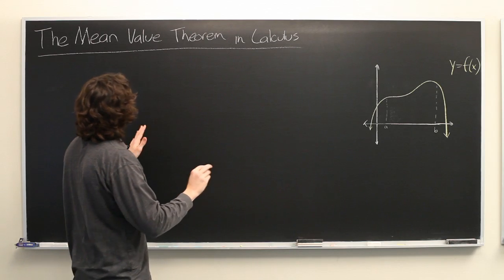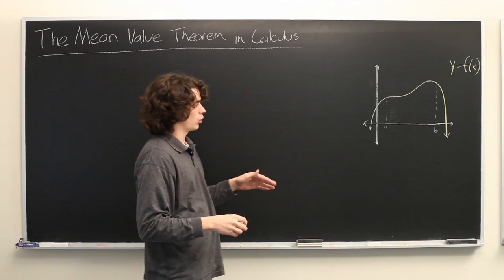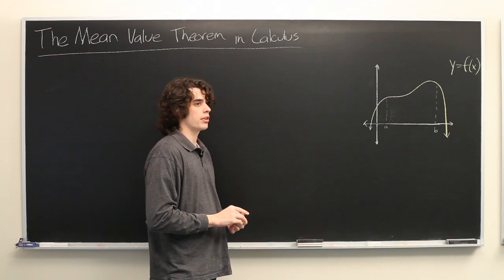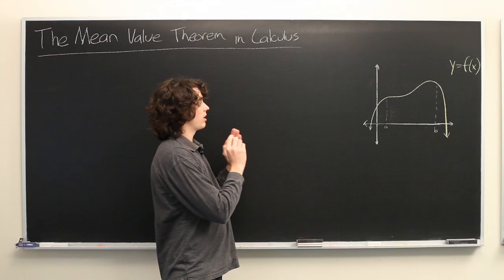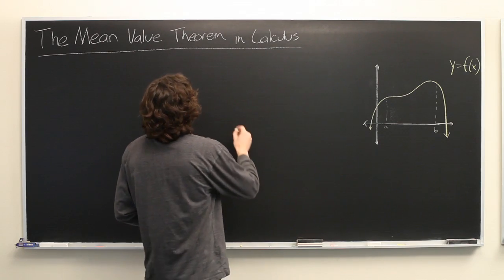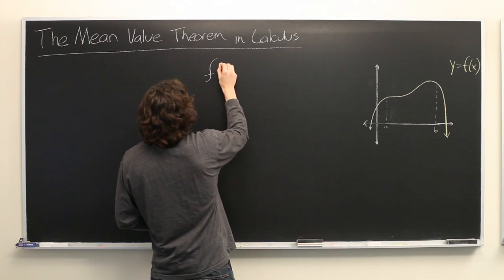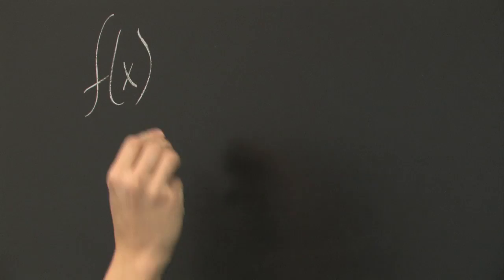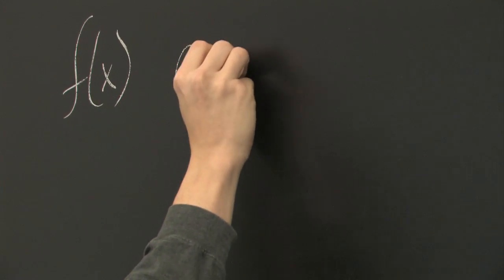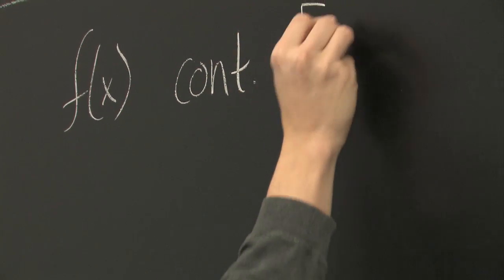Now, before we can apply the mean value theorem, which we'll state in a few moments, it's important that there are some characteristics of this function. First, f of x must be continuous on the closed interval from a to b.